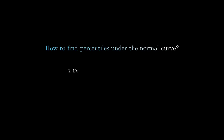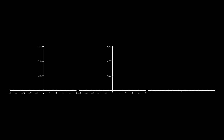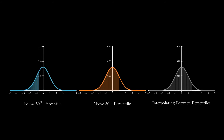To find percentiles under the normal curve, we first draw the area corresponding to the percentile and find the z-score boundary — the area starting from the left tail to the certain z-value that serves as the boundary of our percentile region. We will discuss three examples: a case where the percentile is less than the 50th, a case where it is more than the 50th, and how to interpolate between percentiles.